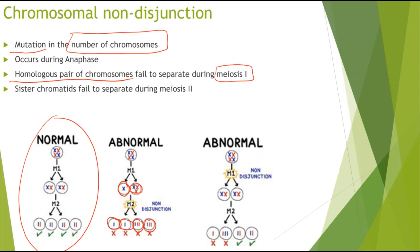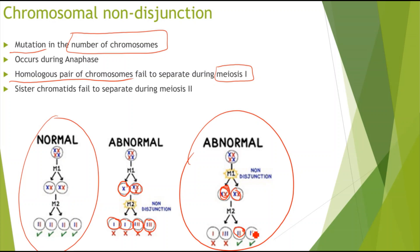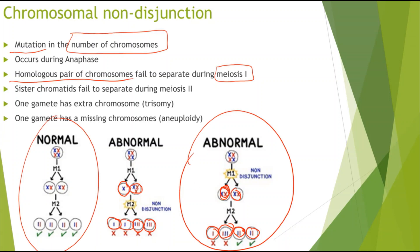Looking at second-division non-disjunction: the first meiotic division occurs normally, but in one of the second divisions, one cell receives only one chromatid while another gains an extra, ending up with three. When a gamete has an extra chromosome, this is called trisomy, and when a gamete has a missing chromosome, this is called aneuploidy. These outcomes can be fatal and lead to many disorders.